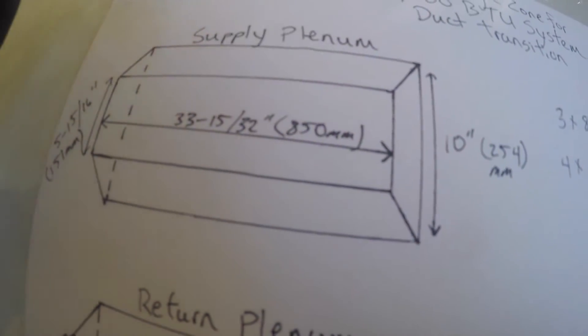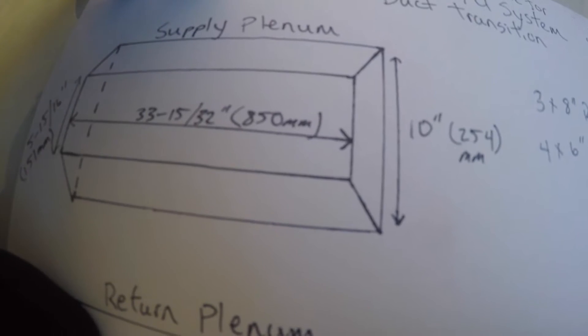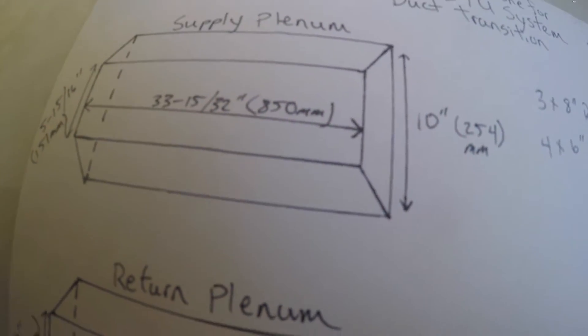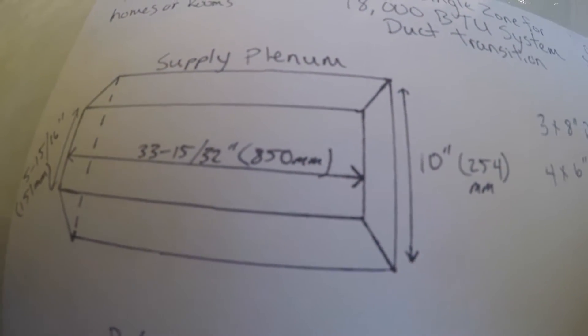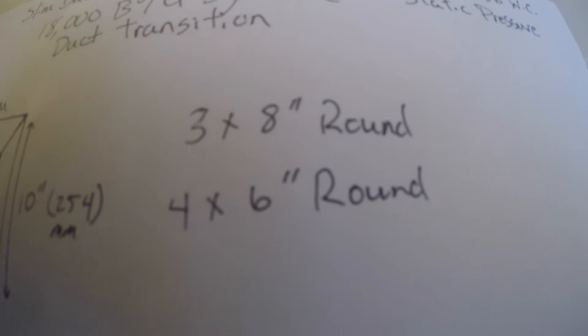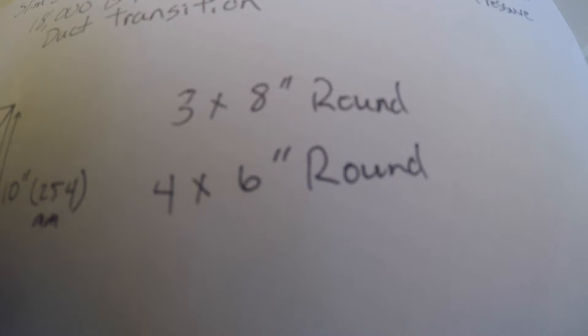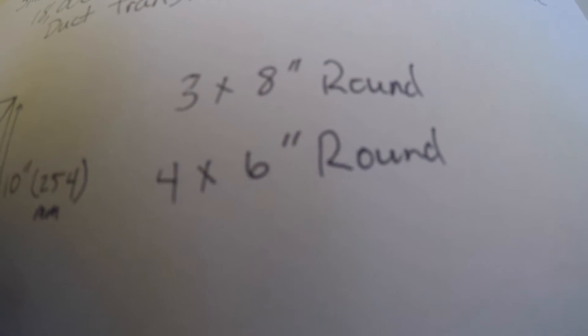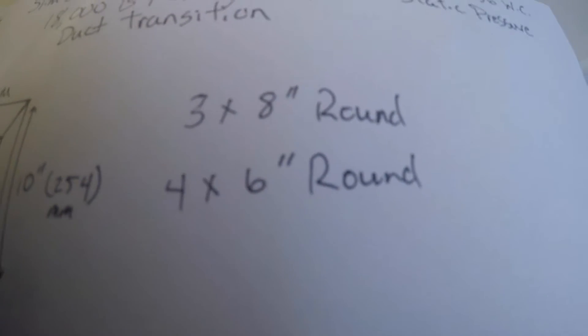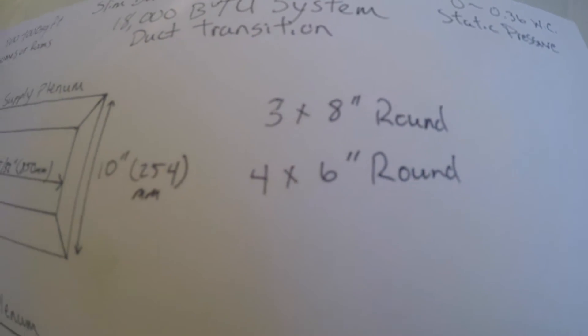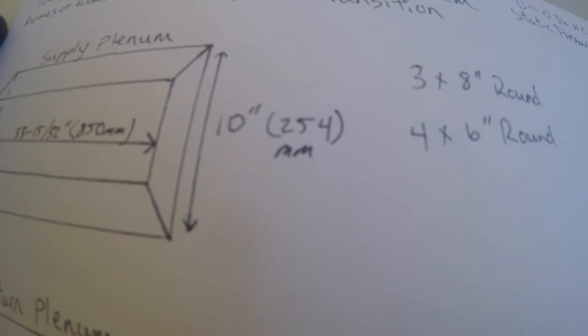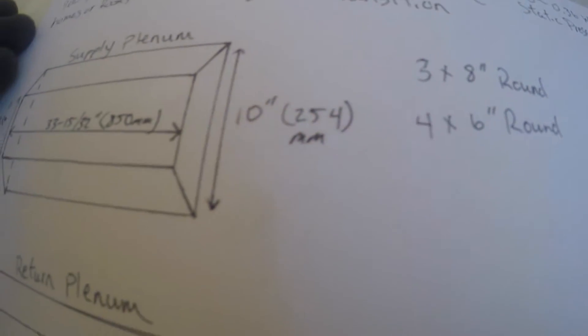so that we could basically cut a round duct on that 10-inch circular surface area. Ducts that would work in this type, based on the static, would be either three 8-inch rounds or four 6-inch rounds. Of course, we want to keep our distance on our ducting less than 15 feet per run, and that would keep our static pressure fine.